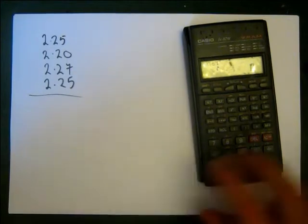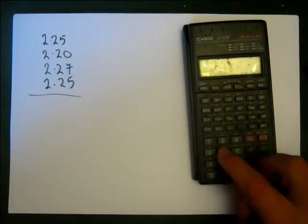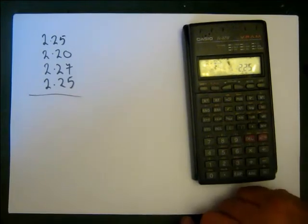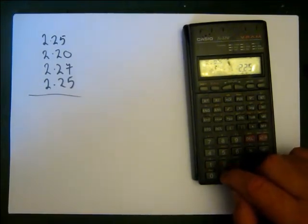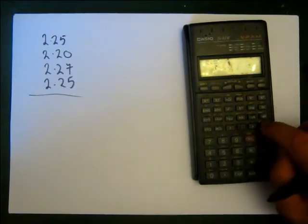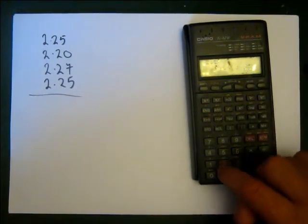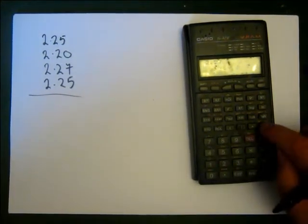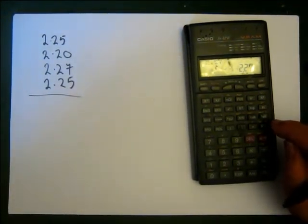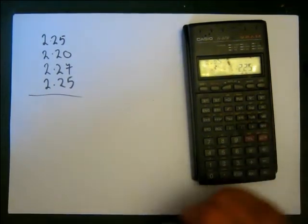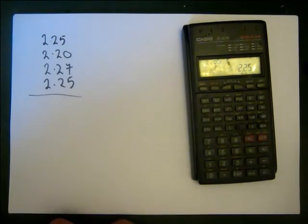What we do is we then go punch the data in, 2.25, and then we hit the memory plus button. And modern ones will say N equals 1. That says it's got one piece of data in there. 2.2 memory plus, 2.27 memory plus, and 2.25 memory plus. So now our data is actually in there.